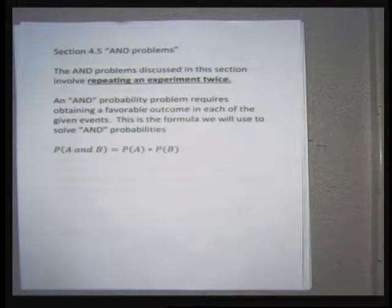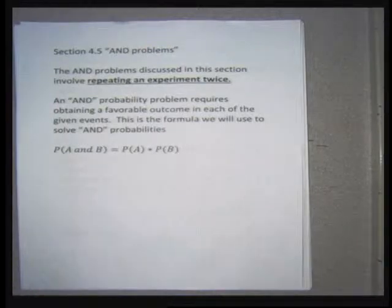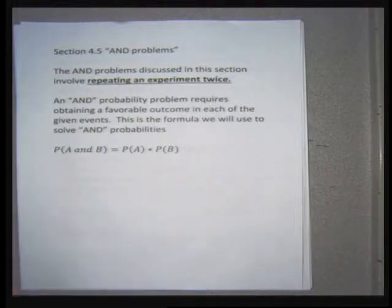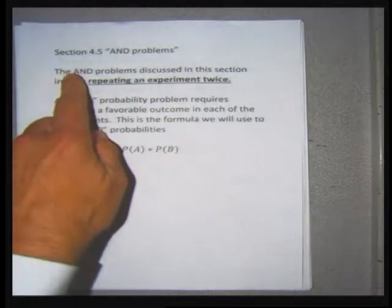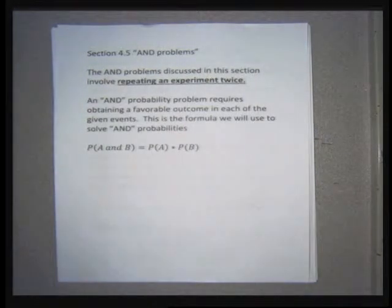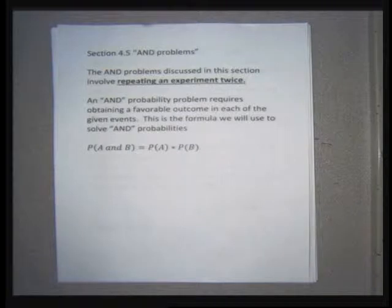This section is titled AND problems. In this section, a problem is going to involve multiple probabilities — every problem is going to have multiple experiments, and we're going to have to compute the probability separately for each experiment. An experiment is a loosely defined term: picking a shirt from five shirts can be an experiment, or rolling a dice one time and recording the number that comes up face up is an experiment.